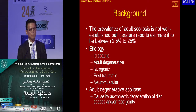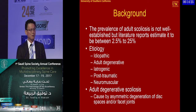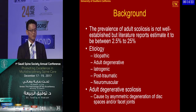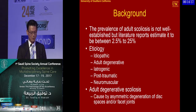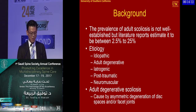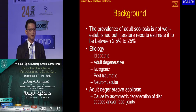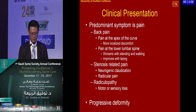Adult spinal deformity is a very prevalent problem. In the United States, the range has been reported anywhere from 2.5% to 25%, but the average is somewhere between 6% to 8%. Most of these are de novo or adult degenerative spinal scoliosis, mostly from degeneration of facet as well as disc disease.